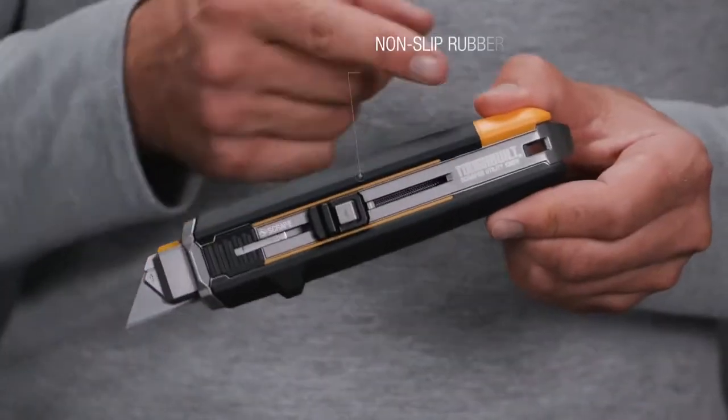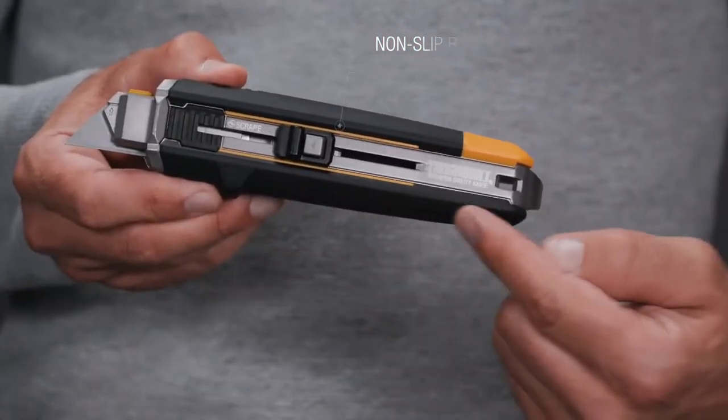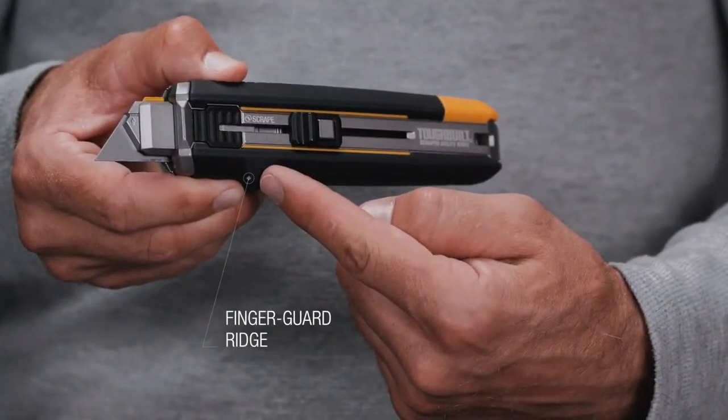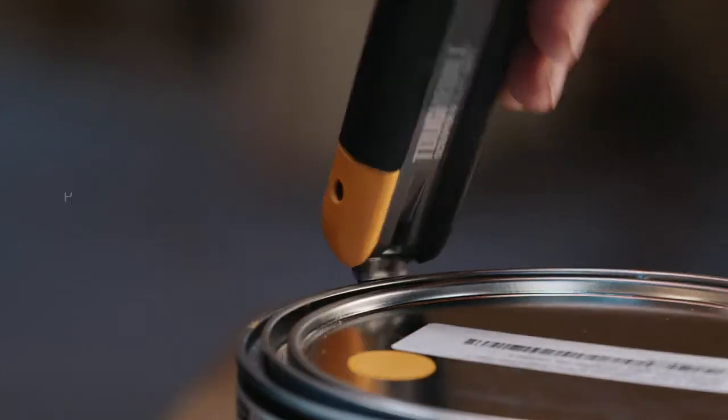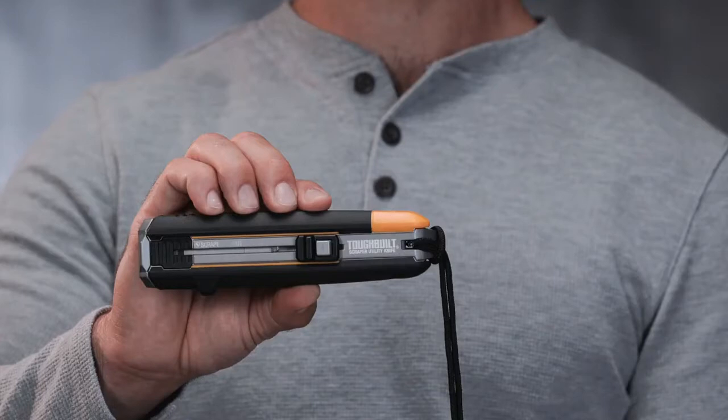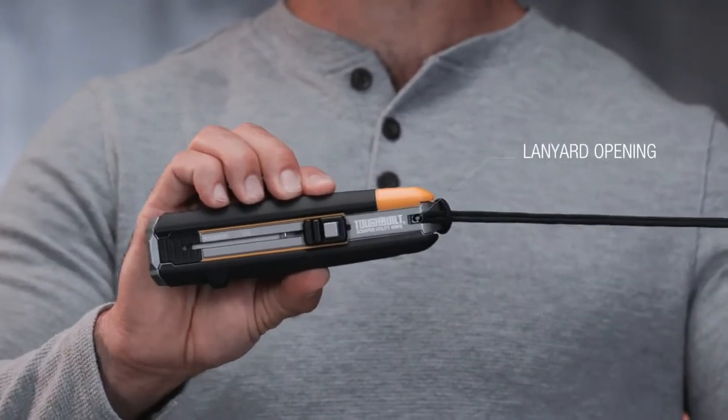The rugged non-slip rubber handle is strong, durable, and easy to hold. We gave it a finger guard ridge right here for cutting safety. It's even got an integrated paint can opener and a handy lanyard opening at the bottom for easy tethering.